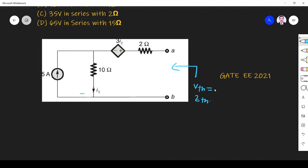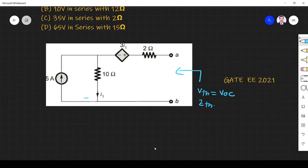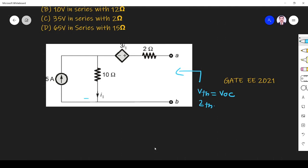Let us find the open circuit voltage. I apply normal analysis. Here you see, since it is open circuit, the current through this loop is zero. So 5 amps comes here, all the current will go here. So what is the voltage across this terminal? 50 volts.